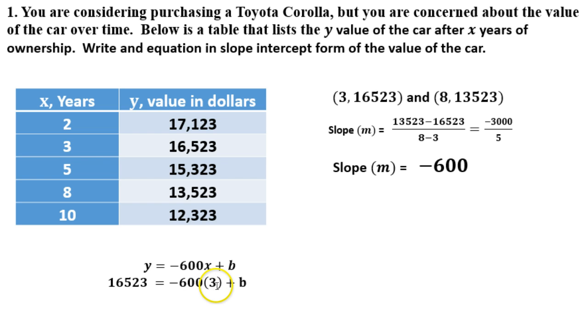Negative 600 times 3 would be negative 1,800. Now I need to get b all by itself, so I'm going to add 1,800 onto both sides. When I do that, my b ends up being 18,323. Now I know what my m is and what my b is, so I just have to rewrite it all.